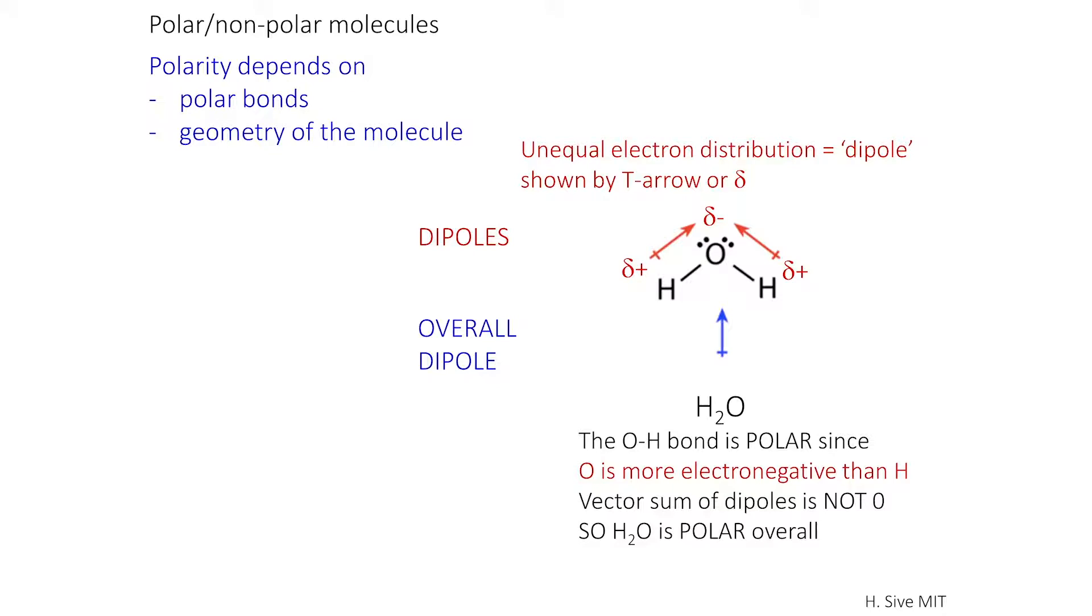So here is water, and you can see that there is an unequal electron distribution. This is called a dipole. The dipole is because the oxygen of the water is very electronegative. It pulls the electrons towards it.